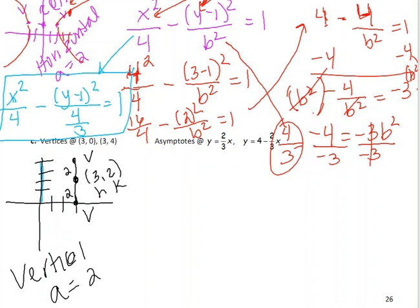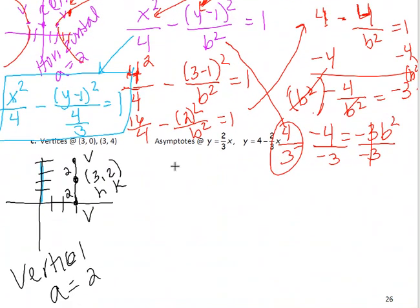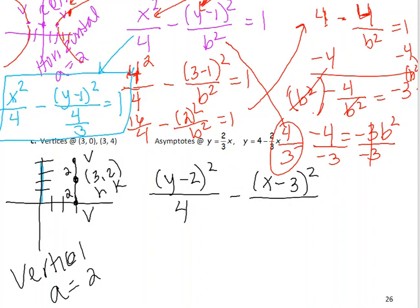And so, I go back up to the top, and my equation for vertical is y minus k squared over a squared minus x minus h squared over b squared equals 1. So, I am going to start with y minus k squared over a squared. a is 2, so squared is 4, minus x minus h squared. Over b squared, which I don't know right now, equals 1.